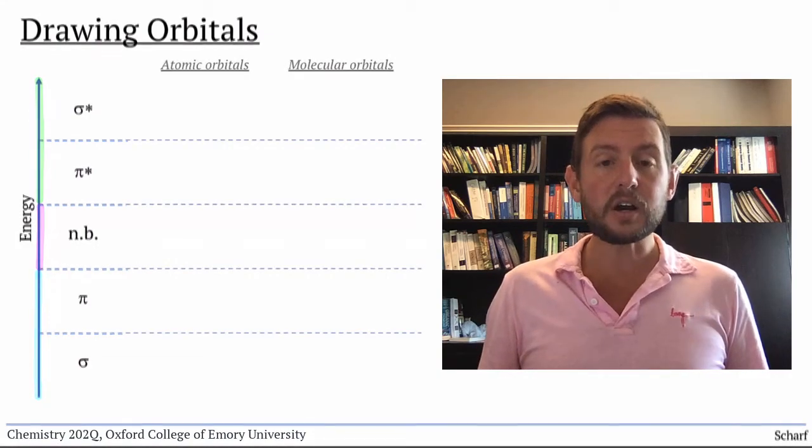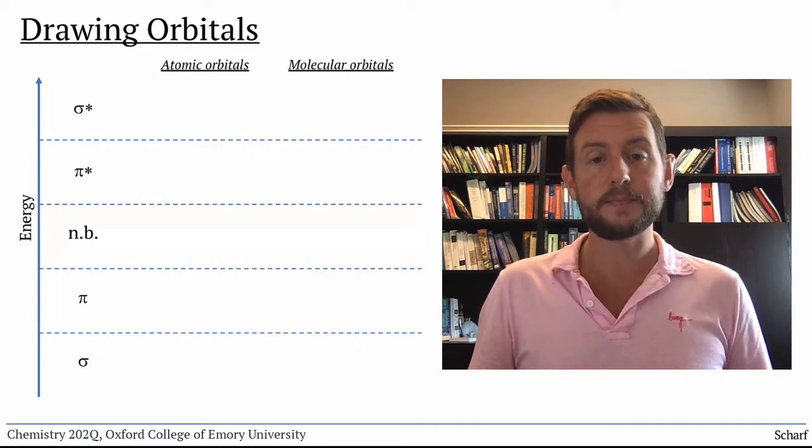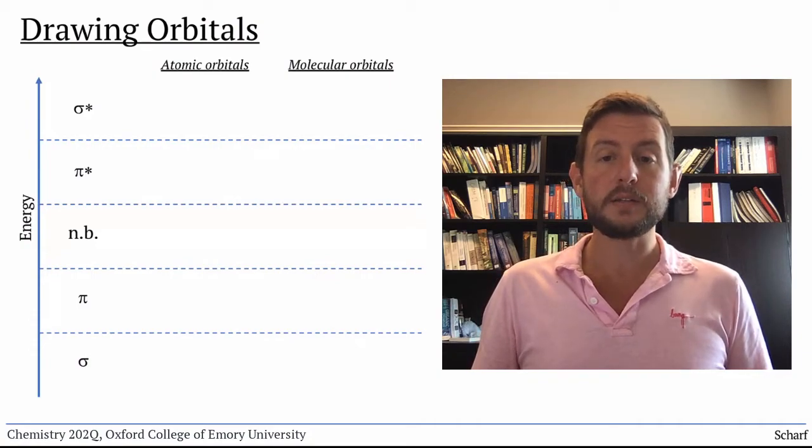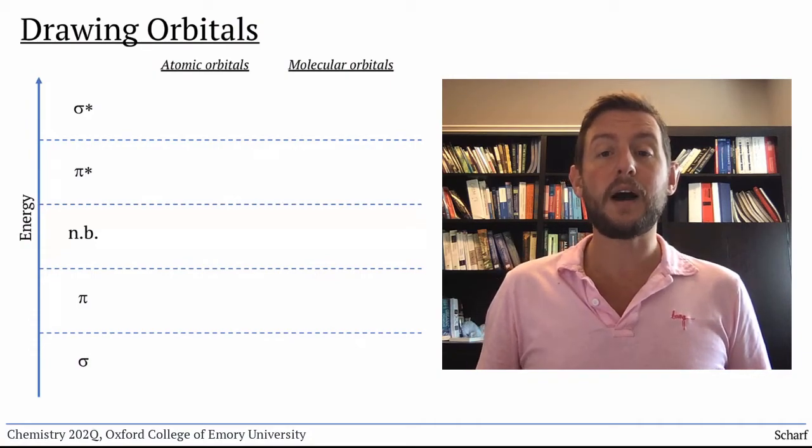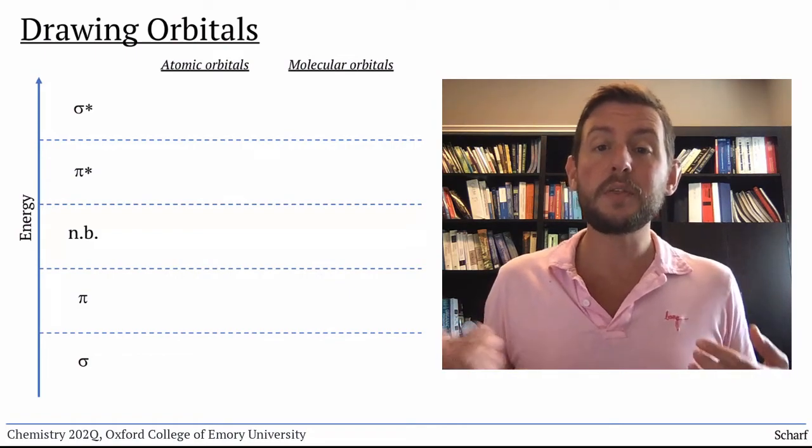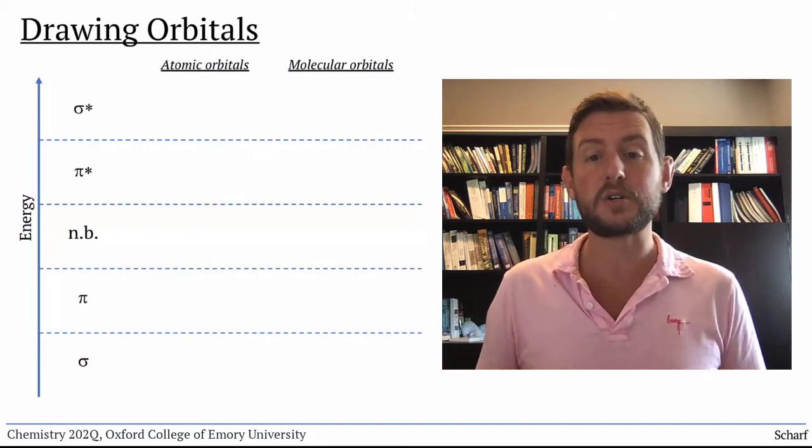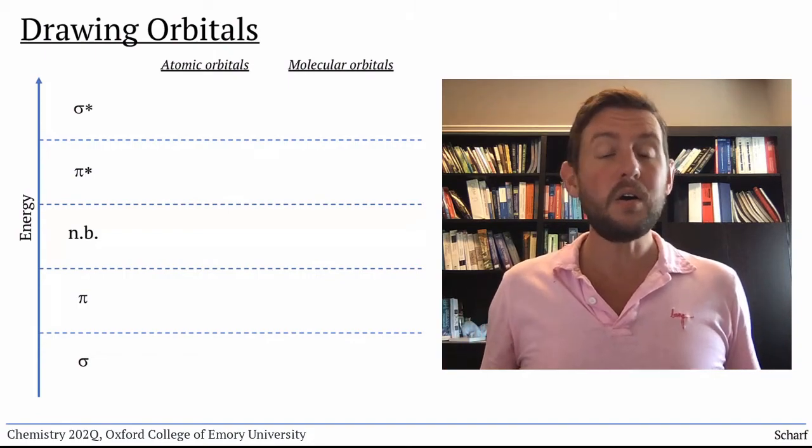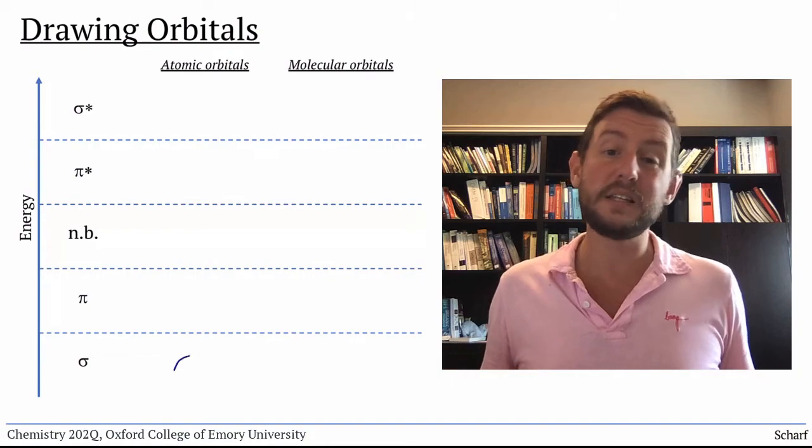Let's start with the sigma-bonding orbitals. Most sigma-bonds come from the overlap of hybrid orbitals, either with hydrogen 1s orbitals, or with other hybrid orbitals on larger atoms. All hybrid orbitals look basically the same.